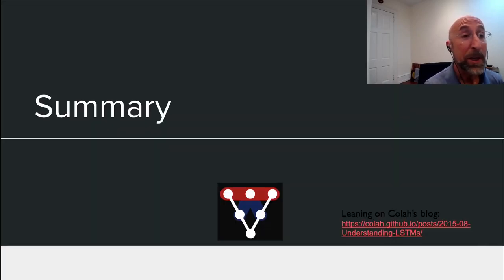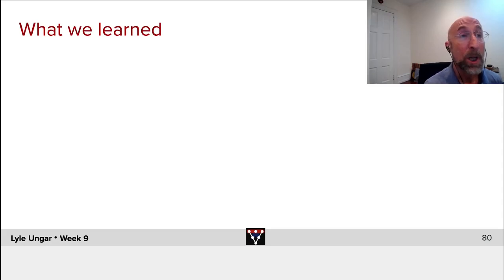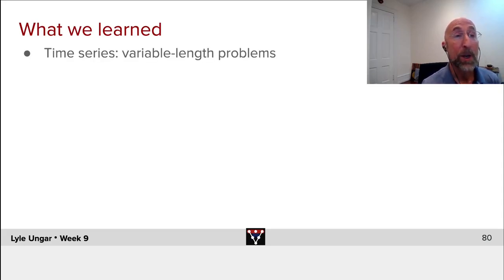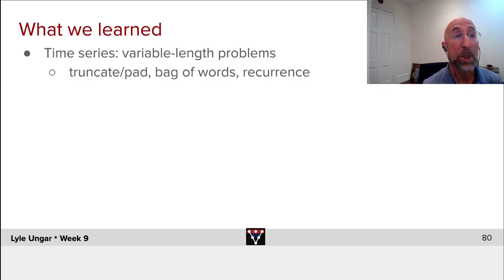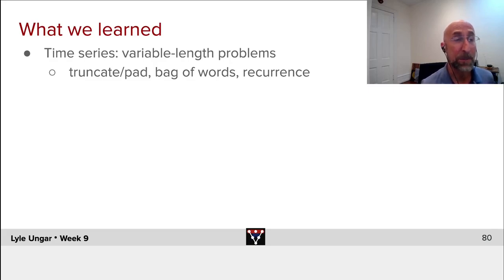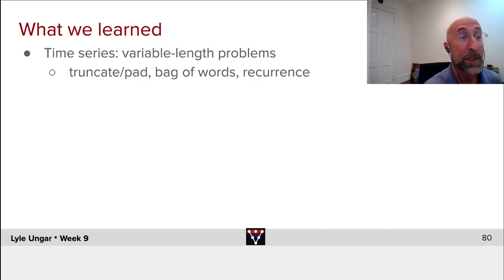What did we learn this week? We looked at time series and saw that they are sequences of variable length, which requires doing something to fit them into a neural net. A simple method that's often used is to truncate and pad to make every length the same. People sometimes do bags of words just counting how often words occur, but mostly people use recurrent neural networks.